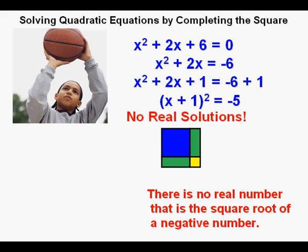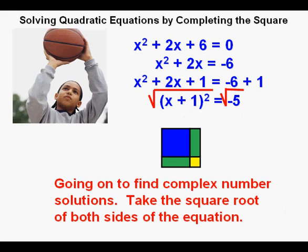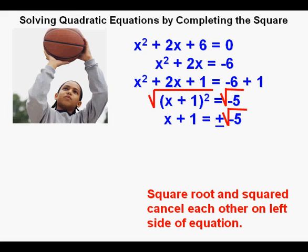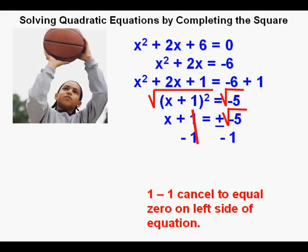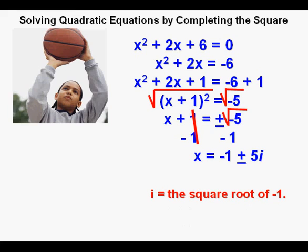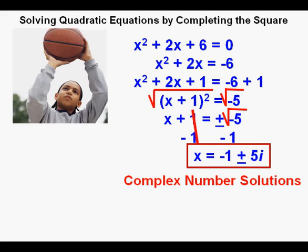But in case you are going on to find complex numbers as answers, let's take the square root of both sides of the equation. We get x plus 1 equals plus or minus the square root of negative 5. Subtracting 1 from both sides and defining the square root of negative 1 as i, we get x equals negative 1 plus or minus the square root of 5 times i. And these are our complex number solutions.